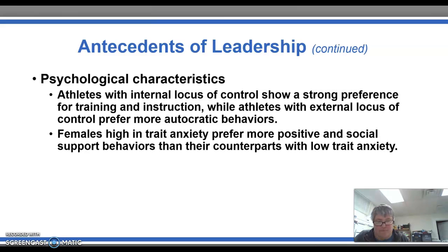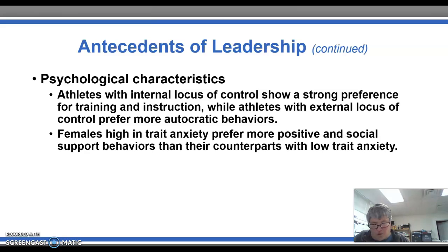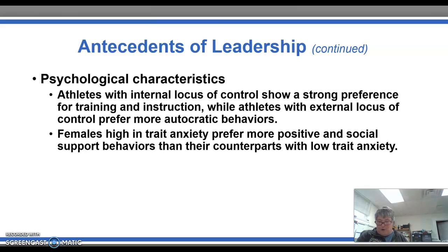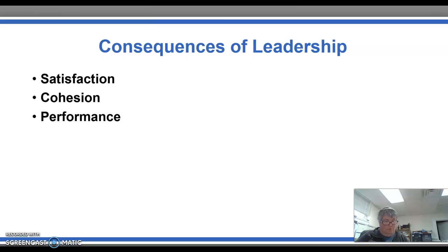The last characteristic is psychological characteristics. Athletes with an internal locus of control show a strong preference for training and instruction, while athletes with an external locus of control prefer a more autocratic style. So if you feel you control what's going on, you prefer training and instruction; if you feel circumstances control what's going on, you prefer the coach to tell you what to do. Females who have high anxiety levels on a regular basis prefer a coach who is positive and provides social support, whereas females with low anxiety levels are not as concerned about the coach being positive and socially supportive.